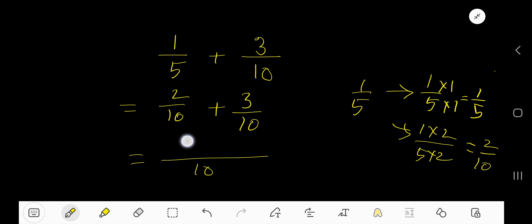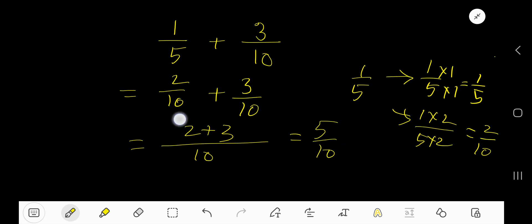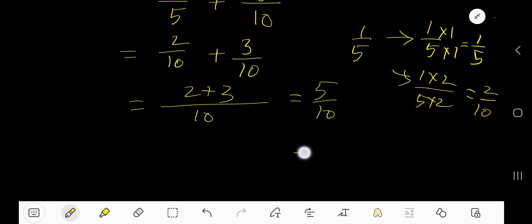So you are getting 5 over 10. Now your task is to reduce this fraction. How to reduce this fraction? You need to divide both numbers by the greatest common factor. Look, 5 is divisible by 5 and 10 is divisible by 5, so you are getting 1 over 2. And there is no factor between 1 and 2 without 1, so this is the result. 1 over 2 is the result.